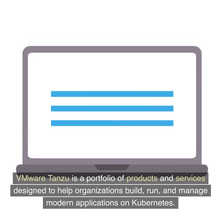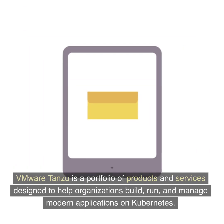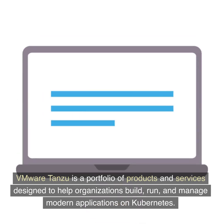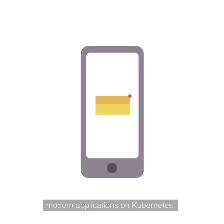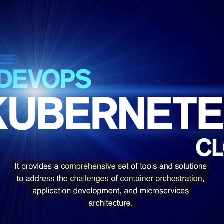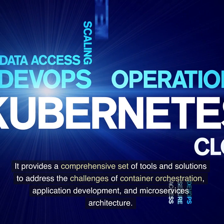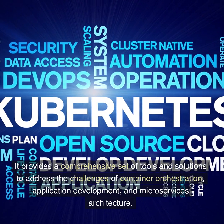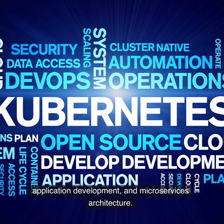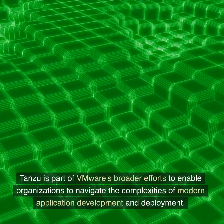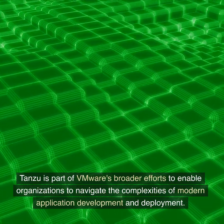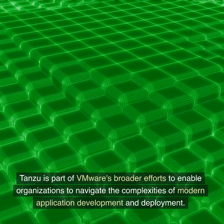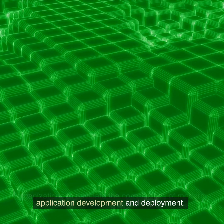VMware Tanzu is a portfolio of products and services designed to help organizations build, run, and manage modern applications on Kubernetes. It provides a comprehensive set of tools and solutions to address the challenges of container orchestration, application development, and microservices architecture. Tanzu is part of VMware's broader efforts to enable organizations to navigate the complexities of modern application development and deployment.